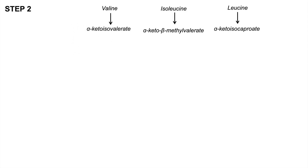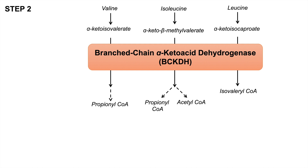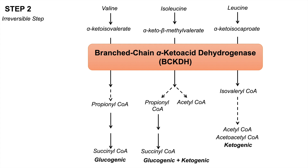Once we have the three alpha-keto acids, they are acted on in a second step by the enzyme branched-chain alpha-keto acid dehydrogenase, or BCKDH, to produce metabolites including propionyl-CoA, acetyl-CoA, and isovaleryl-CoA. This step is an irreversible step, and these metabolites can be further processed into substrates used in the TCA cycle.